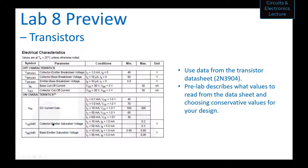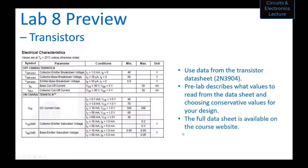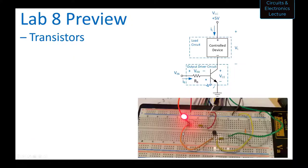You can also see the collector-emitter saturation voltage, VCE saturation. Typically for lower currents it's 0.2 volts; for higher currents VCE goes up to a maximum of 0.3 volts. In lab you'll probably see VCE values of 0.1 volts or less, but you'll design using these higher values to be conservative. Take a look at the datasheet on the course website for more information.